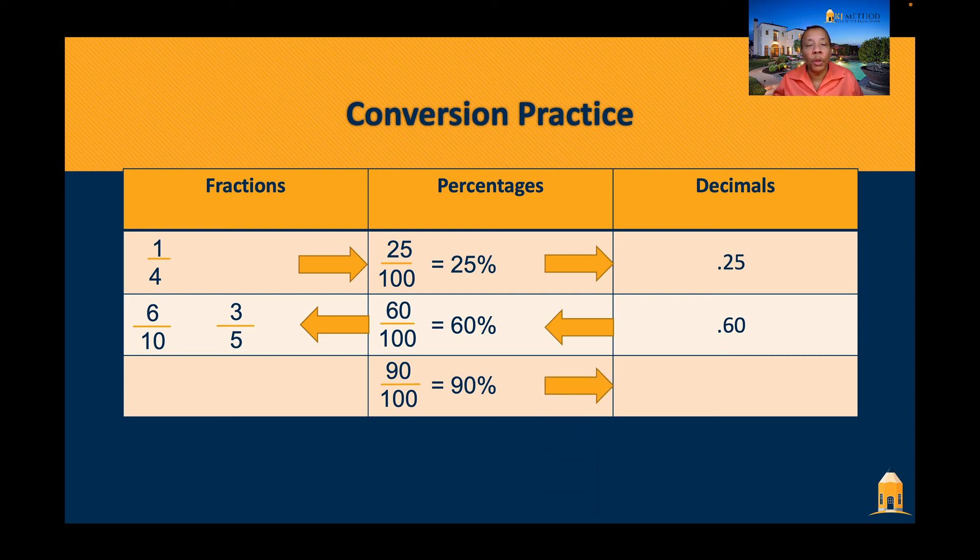Next one, we're at percentages of 90%. Let's move over to decimals. You know that that would be 0.9. How do we move it back over to the other side? That would be 9 over 10. So hopefully that is a quick explanation and it'll get you started working towards our next modules.